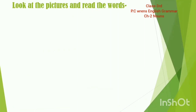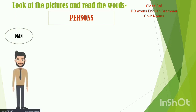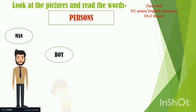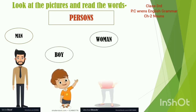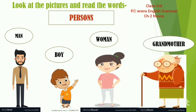Look at the pictures and read the words. Persons — persons means log. As you can see: man, boy, woman, grandmother. These are the examples of persons. Man means aadmi, boy means ladka, women means aurat, grandmother means dadi maan.